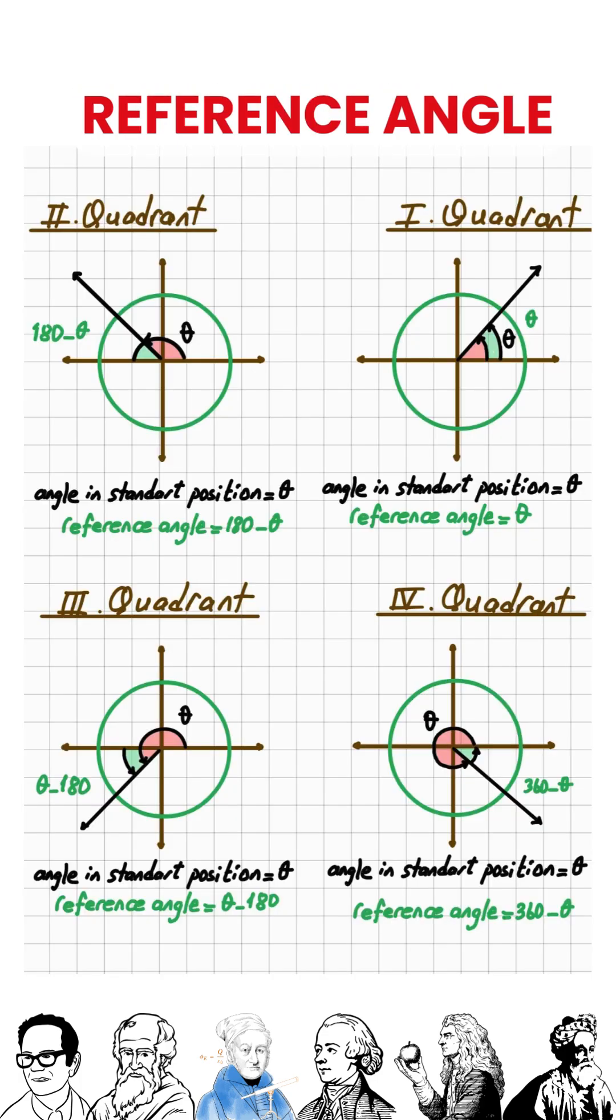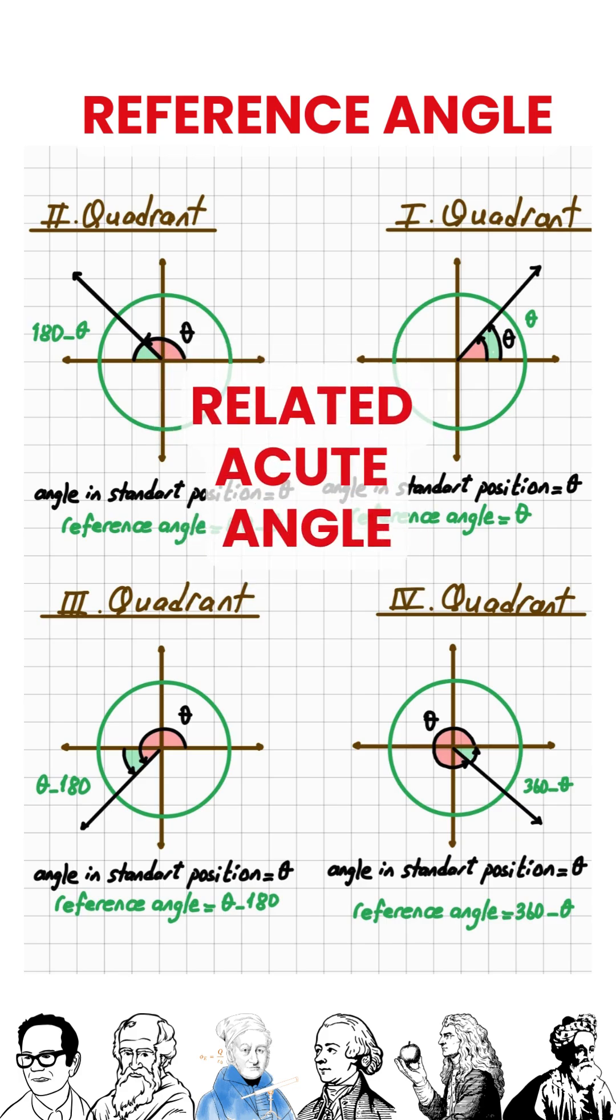The reference angle is the smallest angle formed between the terminal side of a given angle and the x-axis. It is always acute, except when it equals 90 degrees. A reference angle is always taken as positive, no matter which side of the axis it lies on. The reference angle is also called the related acute angle.